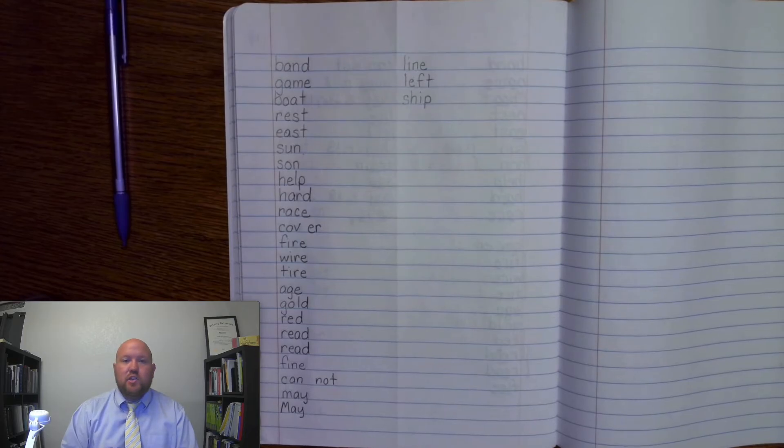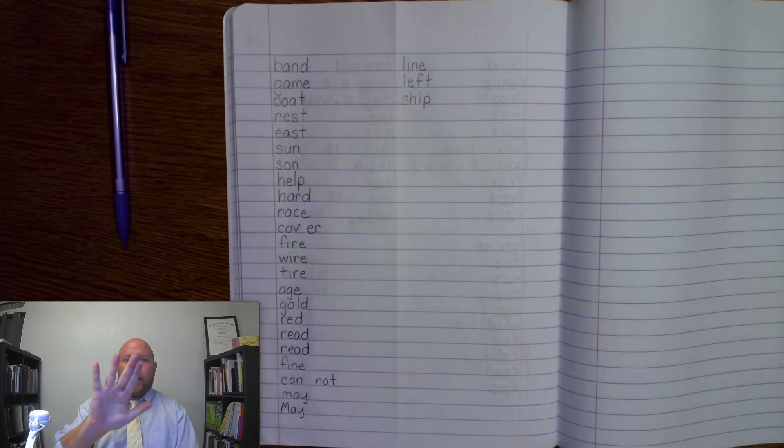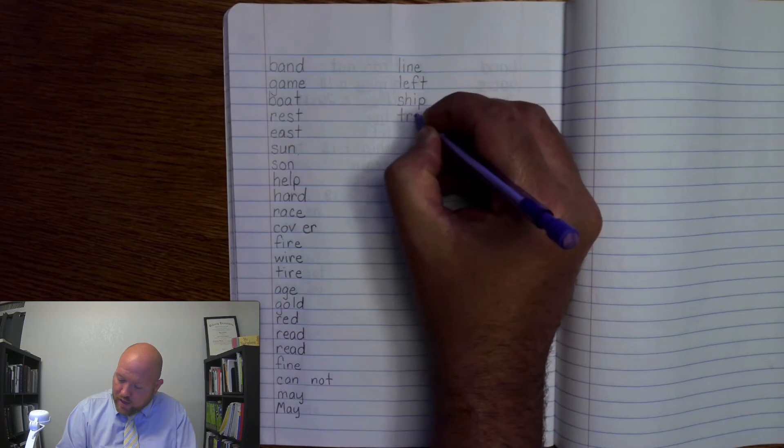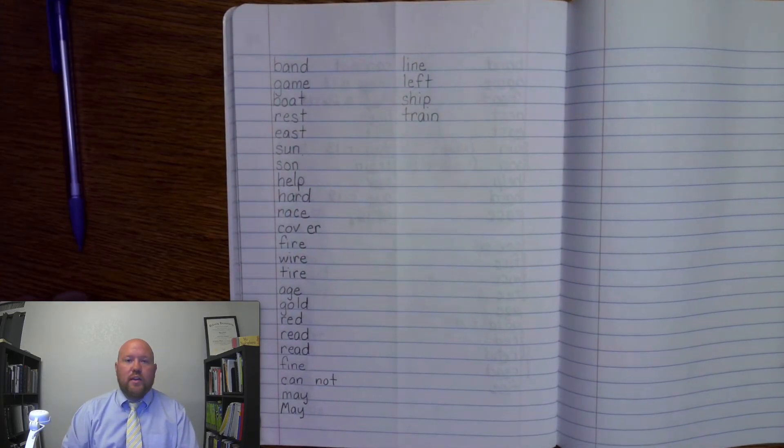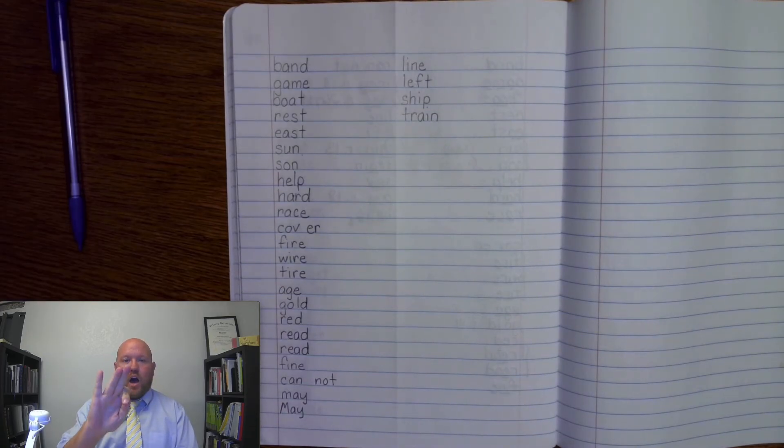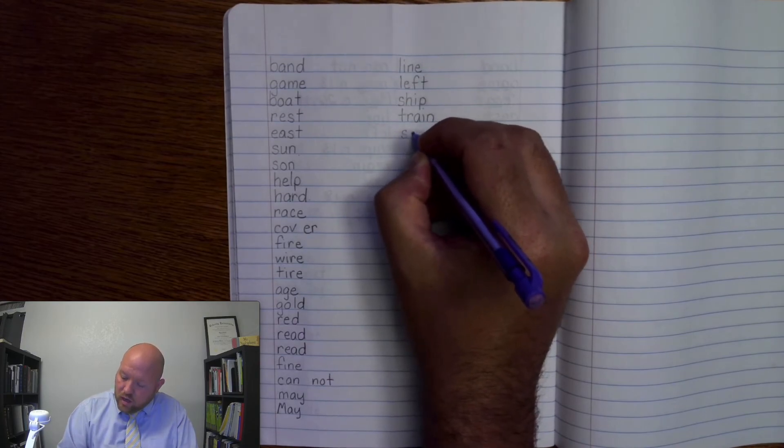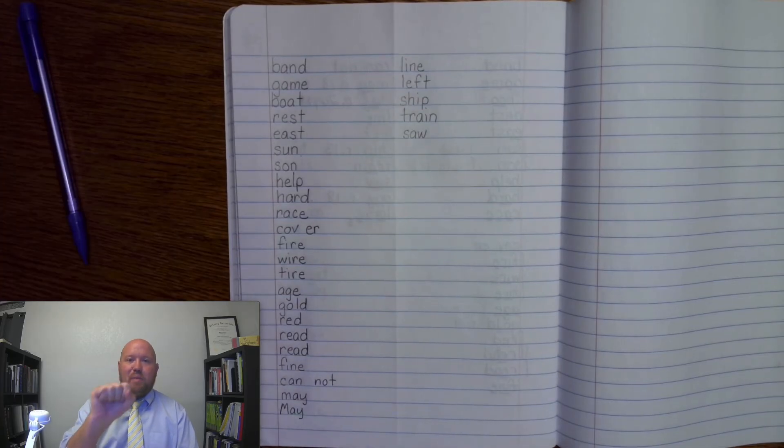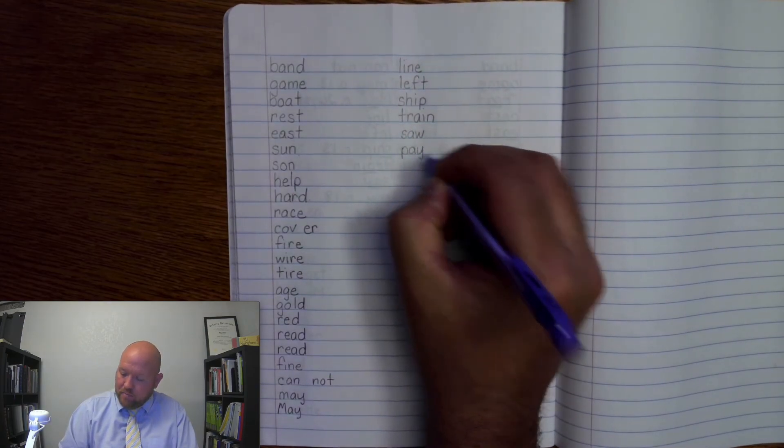Next word is train. T-R-A-I-N. Train. Train. Write it. T-R-A-I-N. Train. Next word is saw. S-A-W. Saw. S-A-W. The next one is pay. P-A-Y. P-A-Y.